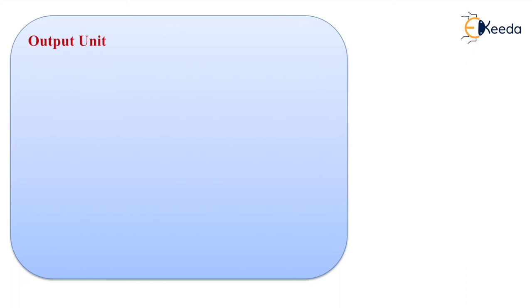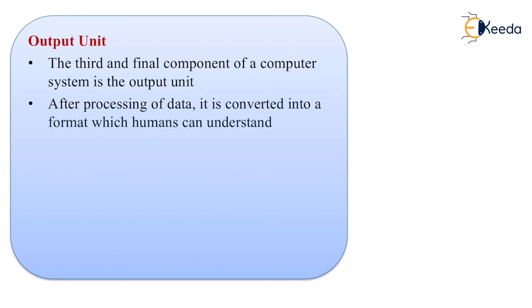Third component of your computer system is output unit. After processing of your data, it is converted into the format which is human can understand. What do you mean by this line? Means, whatever data will get processed, that is in a digital format. Now, what is digital format mean?